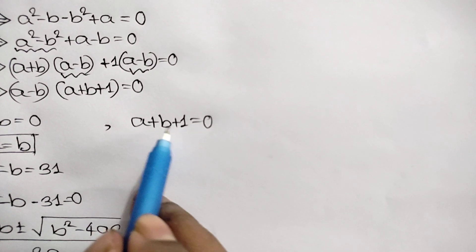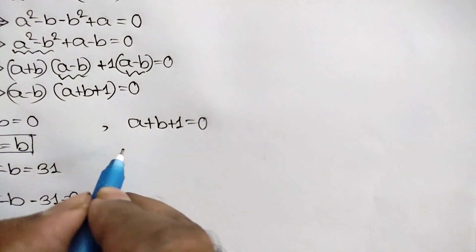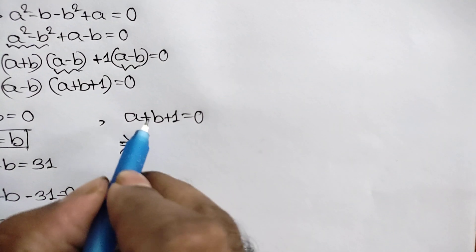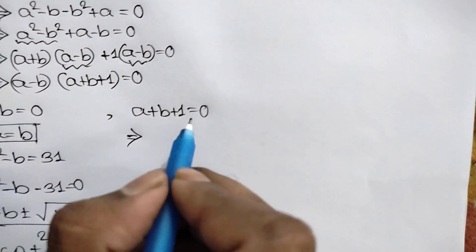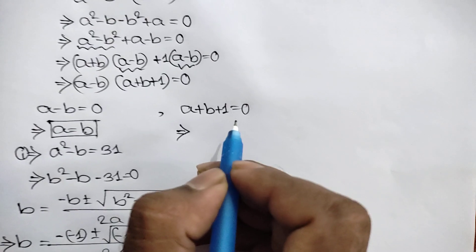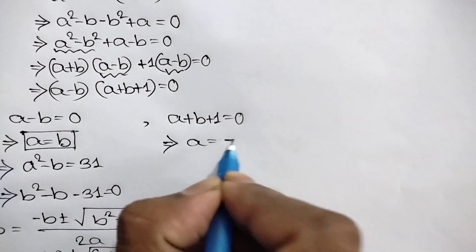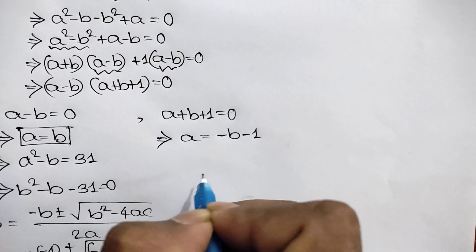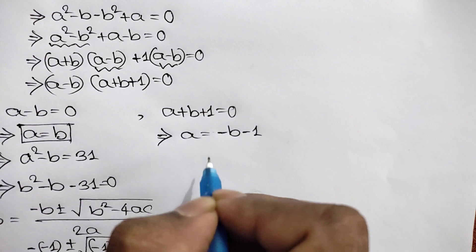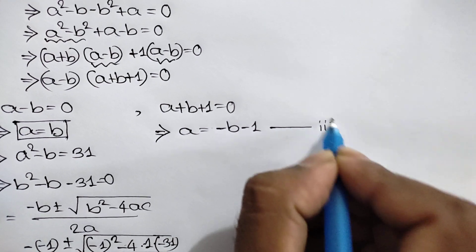Now for case 2: A plus B plus 1 equals 0. Taking B and 1 to the right side, we get A equals negative B minus 1. This is called equation number 3.